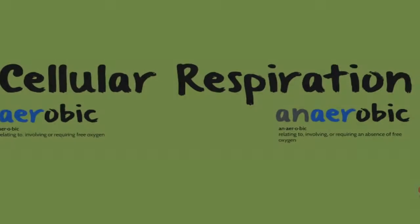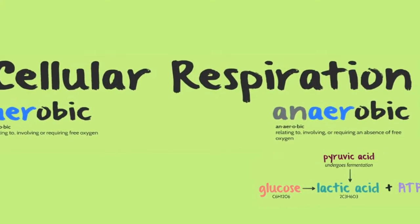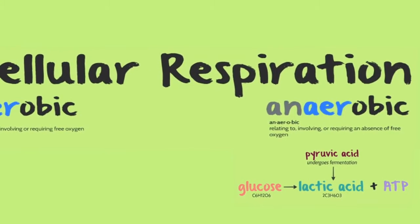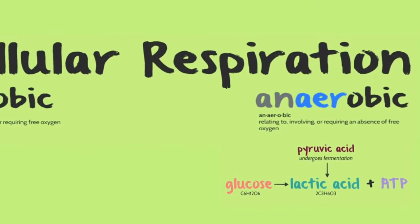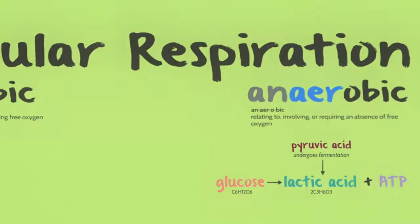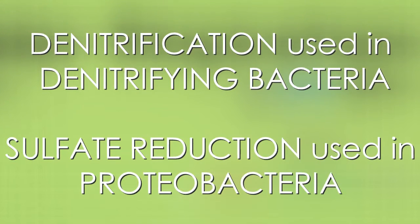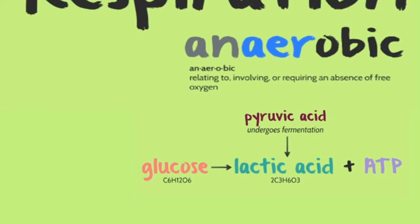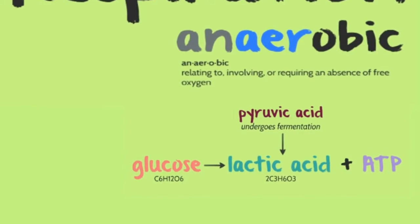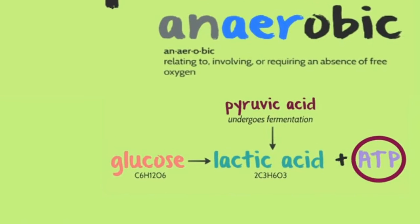Anaerobic respiration refers to the oxidation of molecules in the absence of oxygen to produce energy, in opposition to aerobic respiration which does use oxygen. It requires other electron acceptors such as nitrate, sulfate, elemental sulfur, and carbon dioxide to replace oxygen. It is basically a set of chemical reactions that allow cells to gain energy from complex molecules without oxygen.